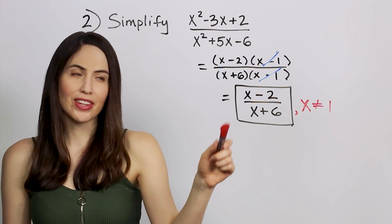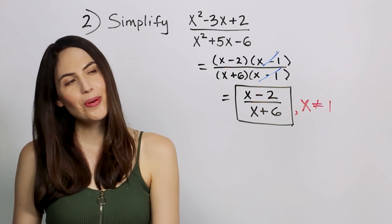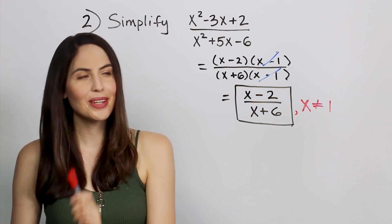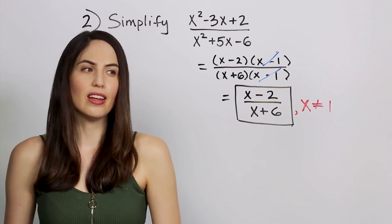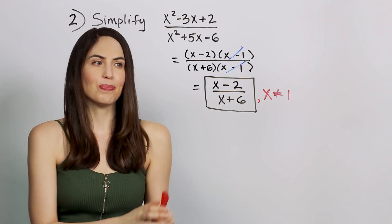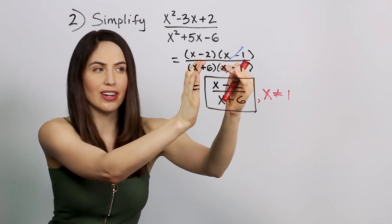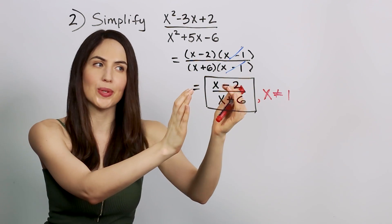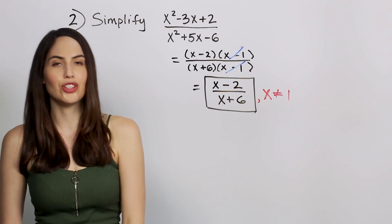Some of you might be wondering if we could have canceled more here, like the x with the x, the 2 with the 6. No, I know you think you're slick, but we can't cancel the x with the x, or these individual terms like that. Only the factors. There are these understood, invisible parentheses around the factors, and we can only cancel those. We can't cancel the individual little terms inside. It's not a legit cancellation.